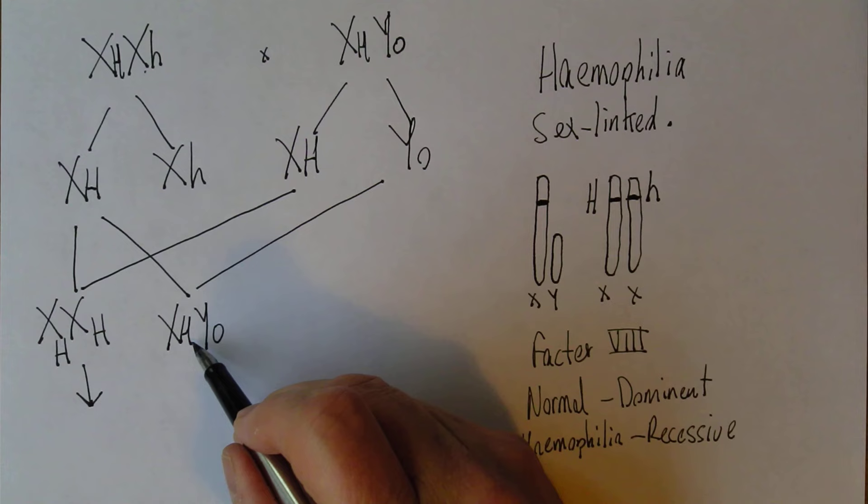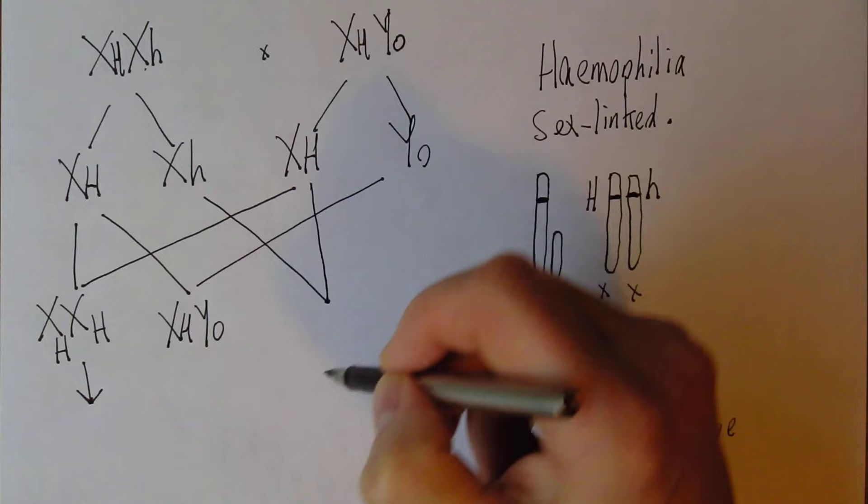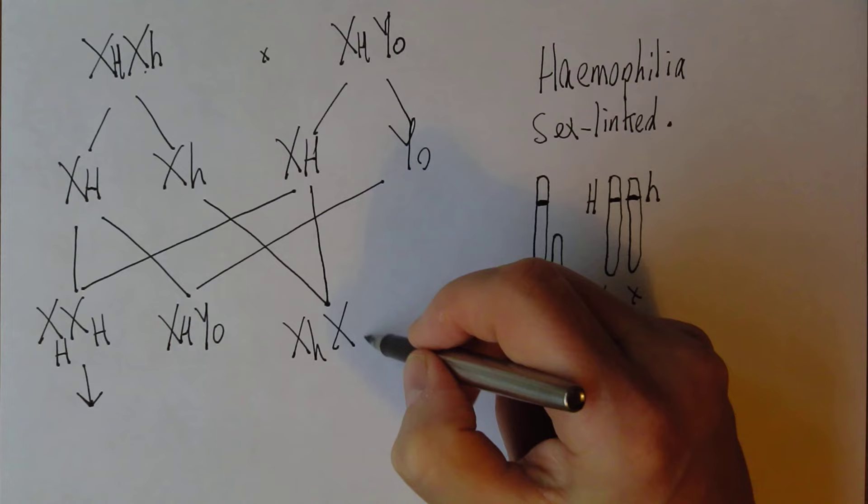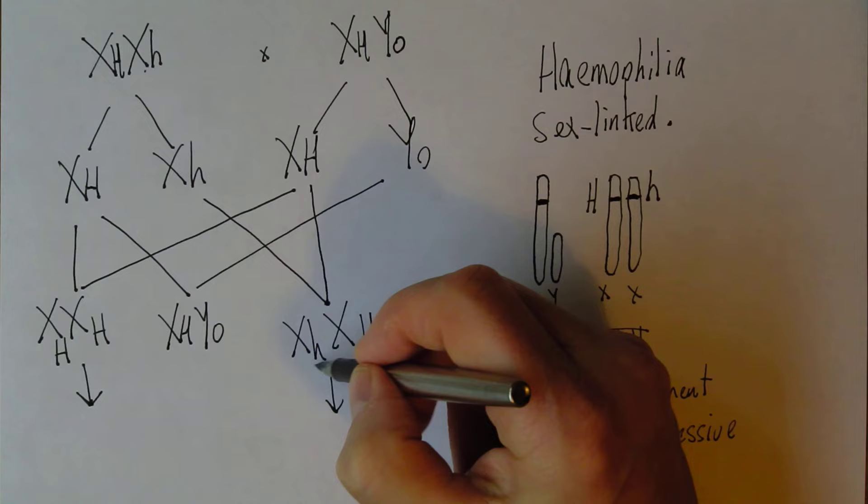Another possibility is that one with that one. Now that gives us an X and an X, so we've got a girl—that one's a small h and that one's a big H. Now this girl is not going to suffer from haemophilia because she has one copy of the normal dominant gene, so phenotypically she'll be fine. But of course, she could potentially pass that defective haemophilia gene on to the next generation.